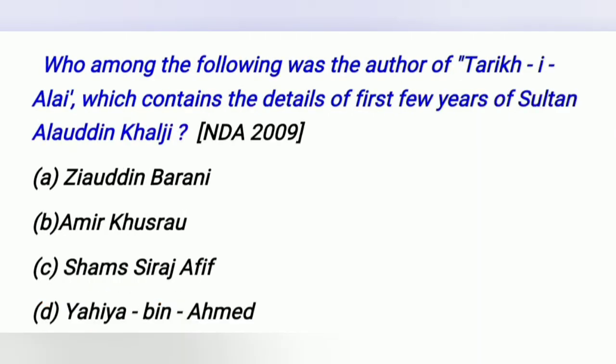Who among the following was the author of Tariq-e-Alai, which contains the details of the first few years of Sultan Alauddin Khalji's reign?